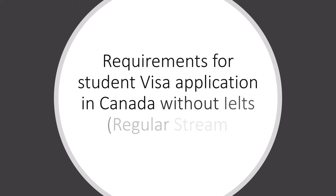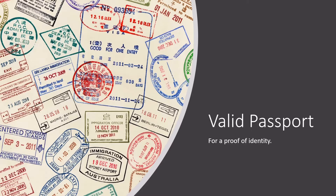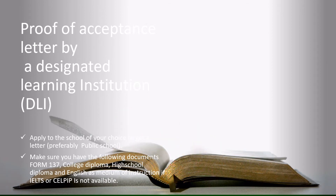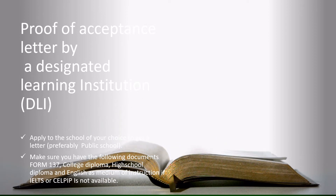The requirements for a student visa application in Canada without IELTS in the regular stream are: your valid passport as proof of identity, and a proof of acceptance letter from a designated learning institution. Make sure to apply to the school of your choice, preferably a public school.